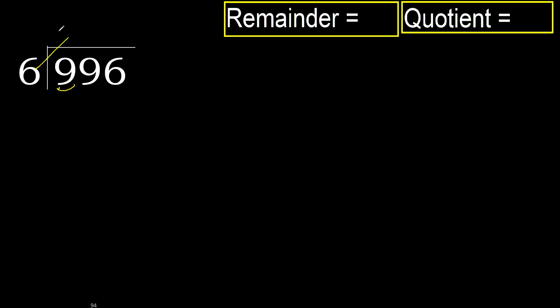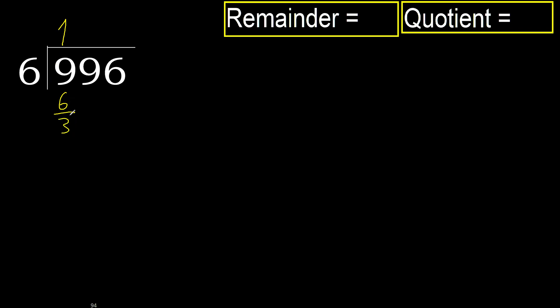6 multiply by 2 is 12 — 12 is greater. Multiply by 1: 6 is not greater. Ok, subtract: 9 minus 6 is 3.